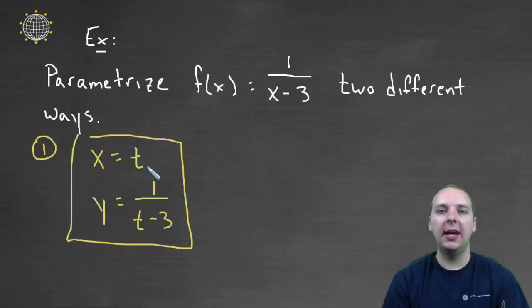And so that's a good tip. Just let x be t, and since the function's already a function of x, take the x's out, plug in t's, and you're done.